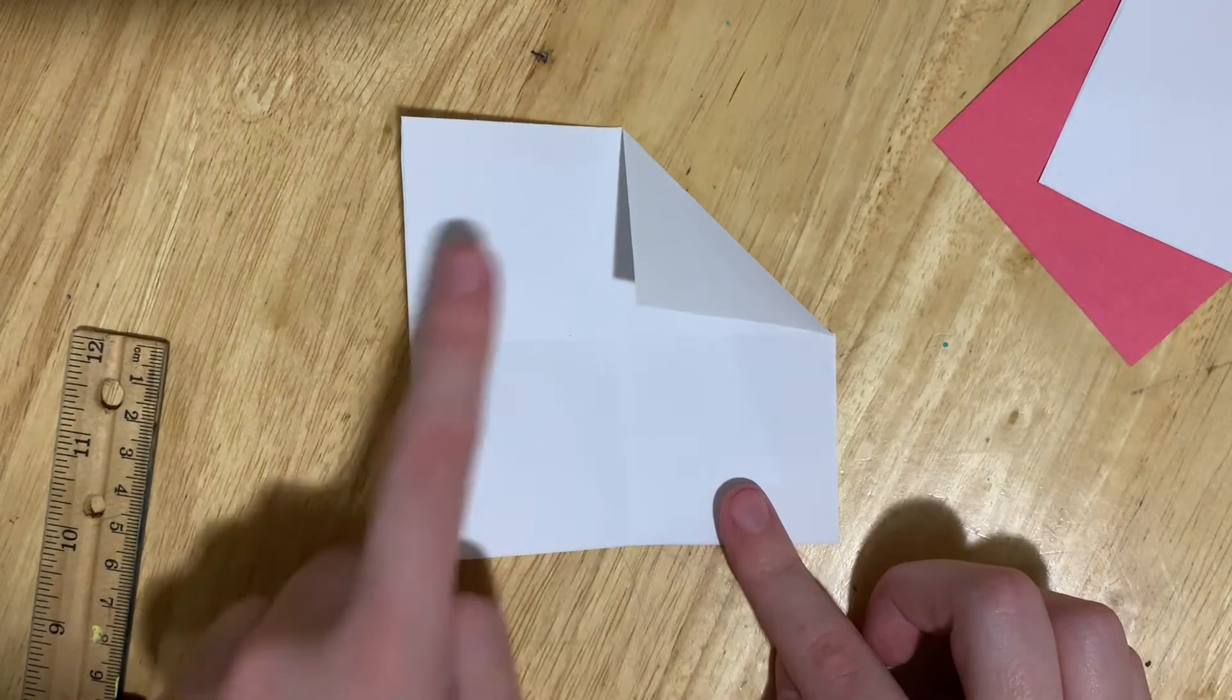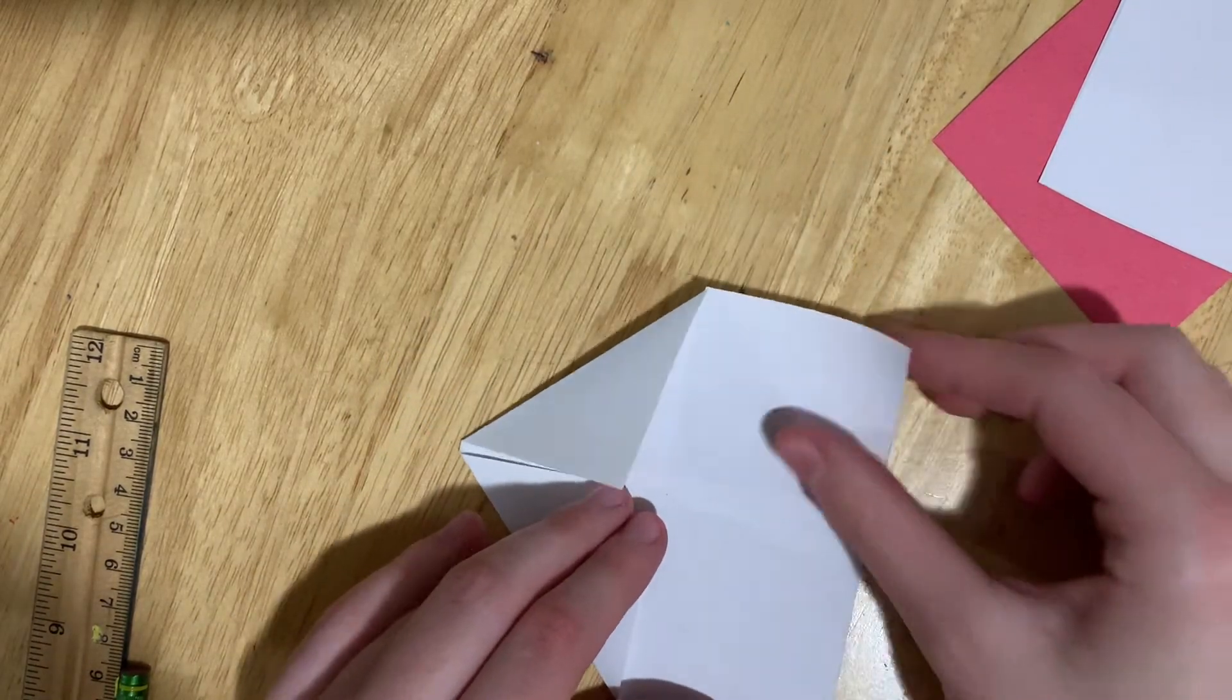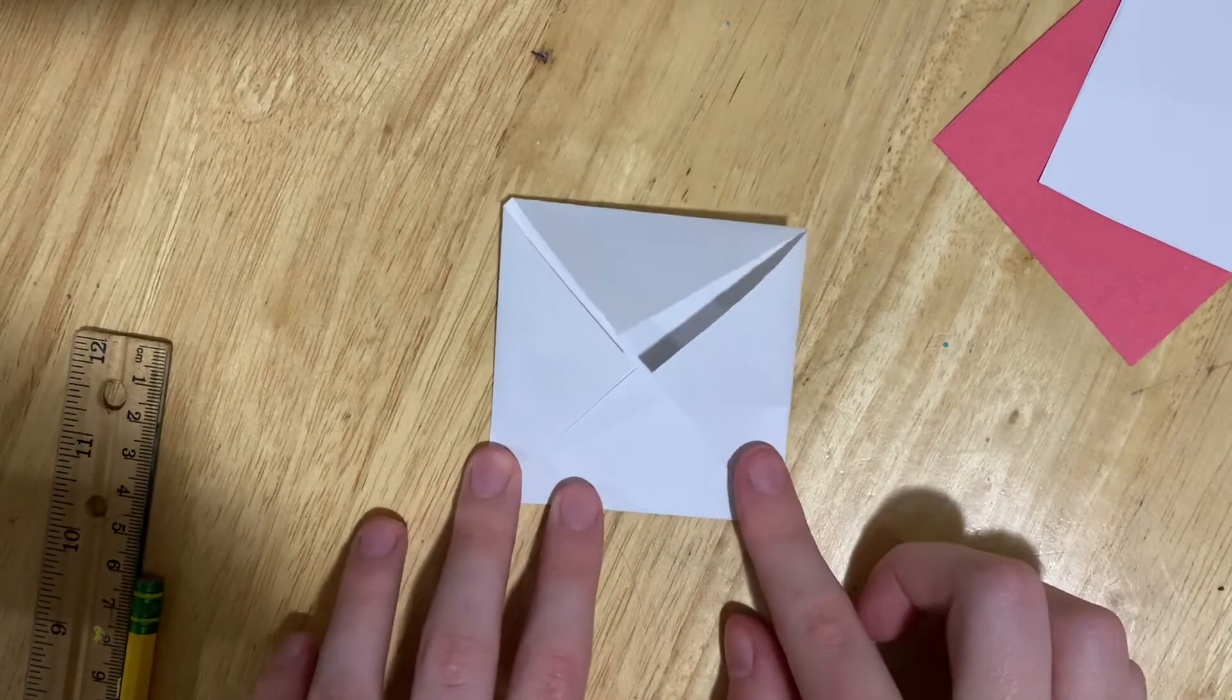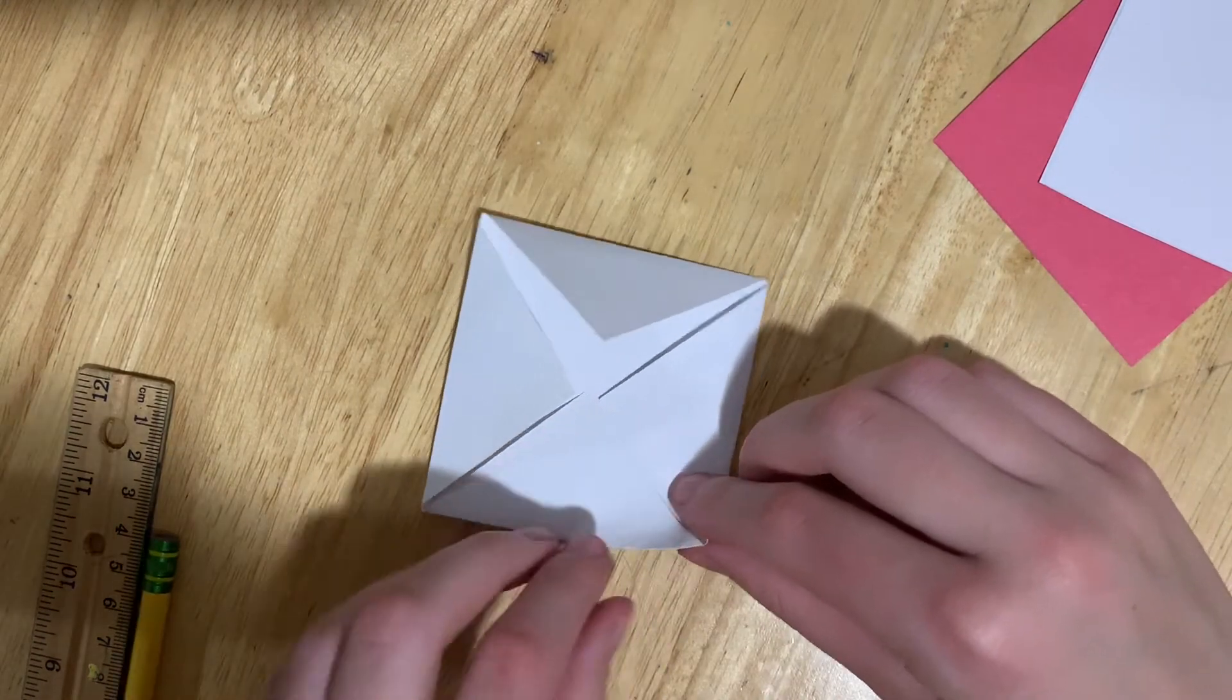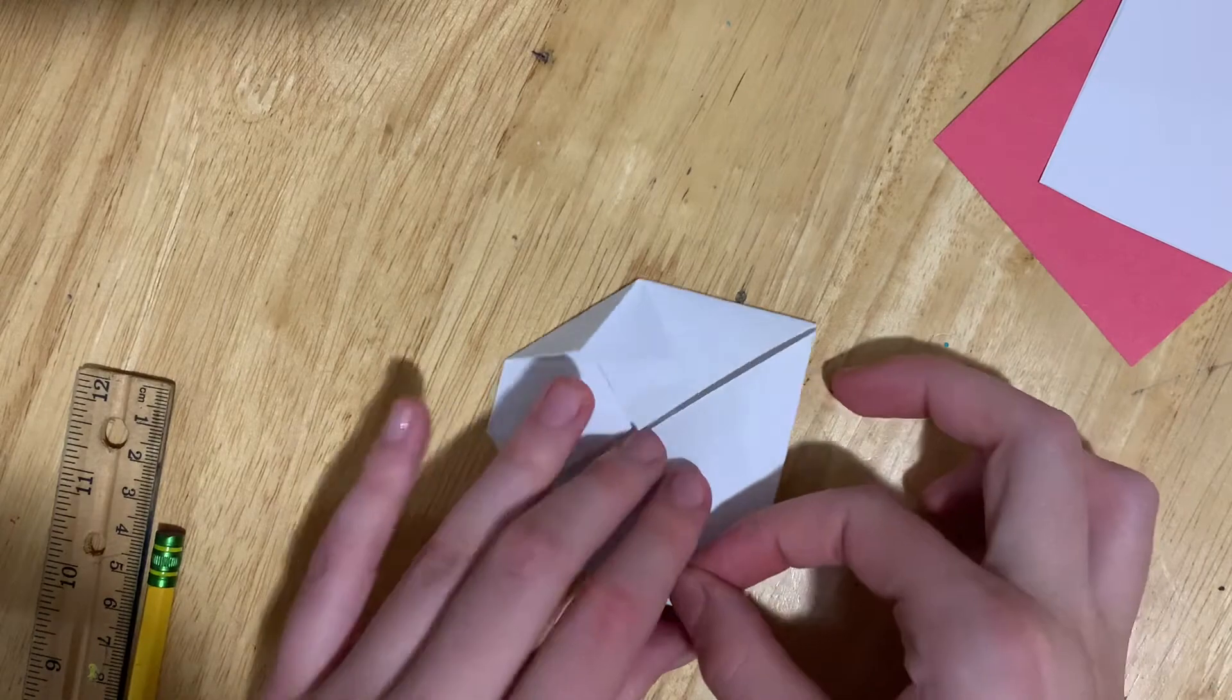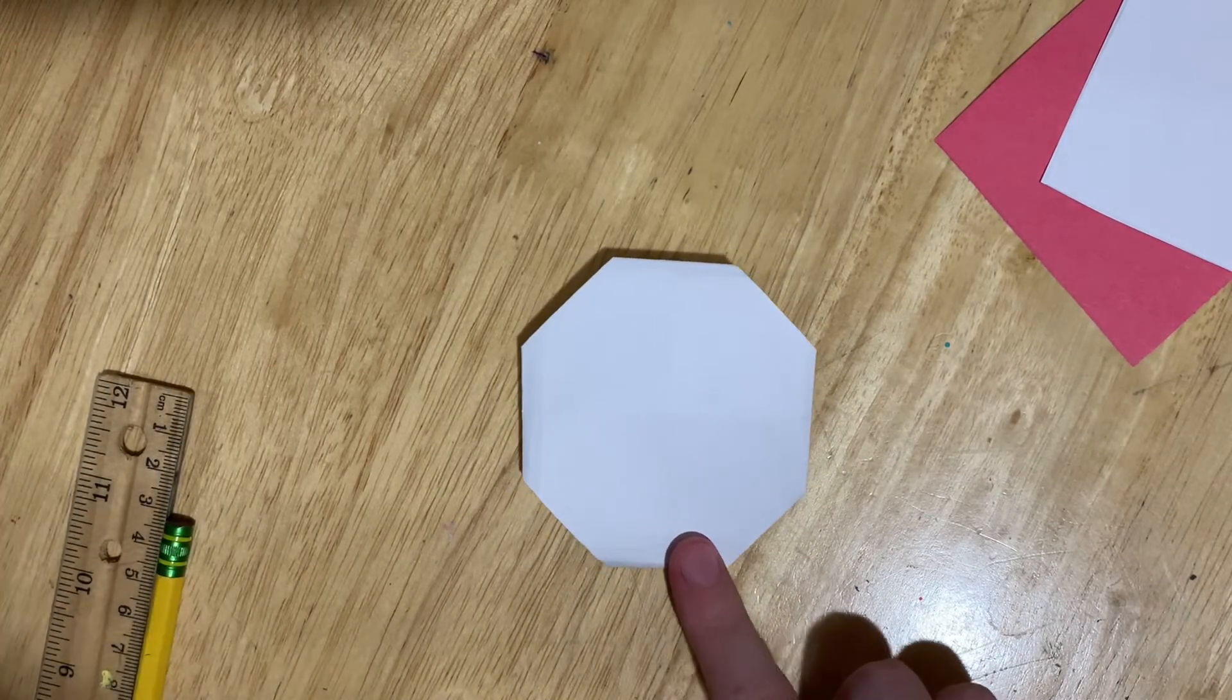You're going to do the same with all four sides. So far, it should look something like this. Next, fold the peaks halfway to the middle and do the same on all four sides. If you turn your paper around, it should look like a hexagon. This is going to be the bottom half.